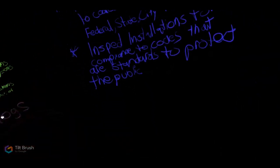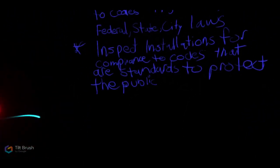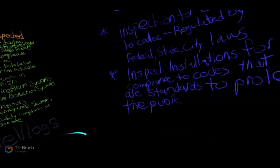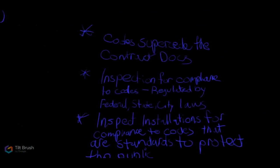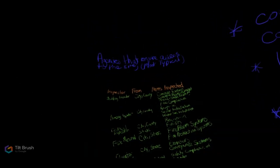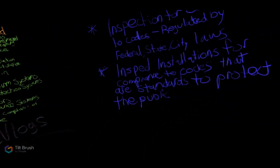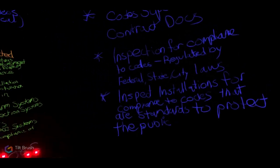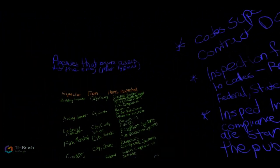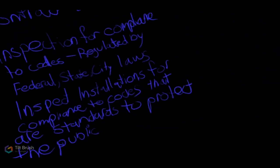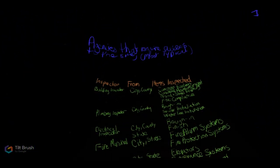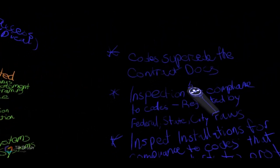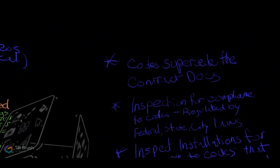This is a continuation on the design, bid, build, delivery model. This is the inspections — these are the typical agencies that would need access to a construction site for almost every single build. So what are they, what are they looking at? Codes.